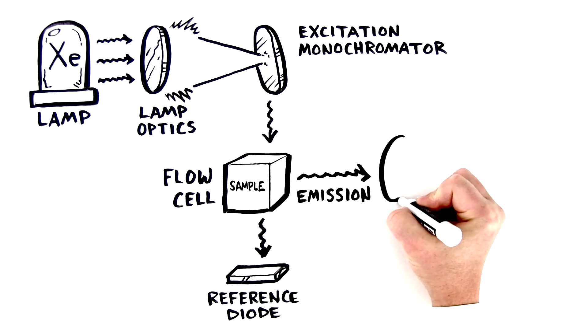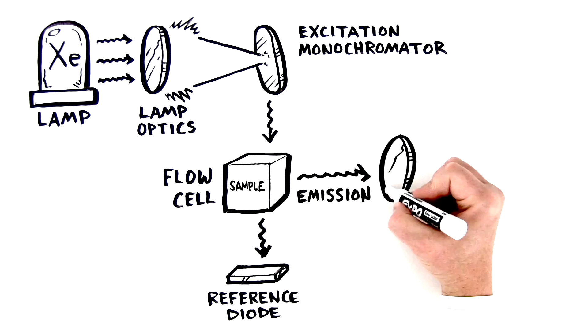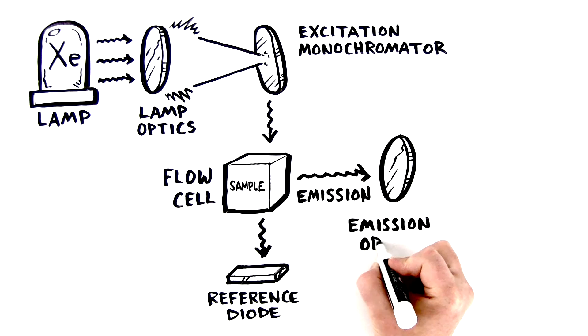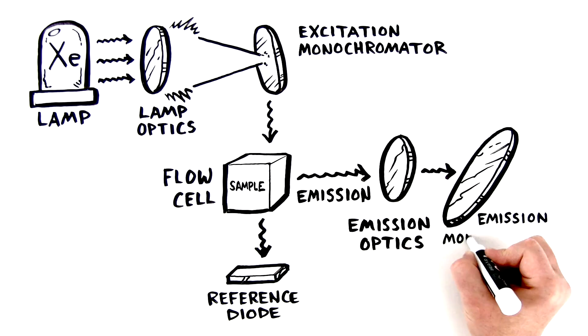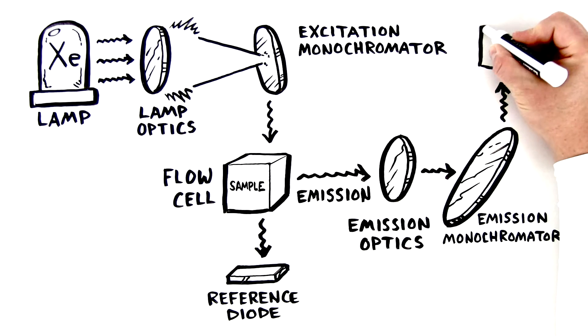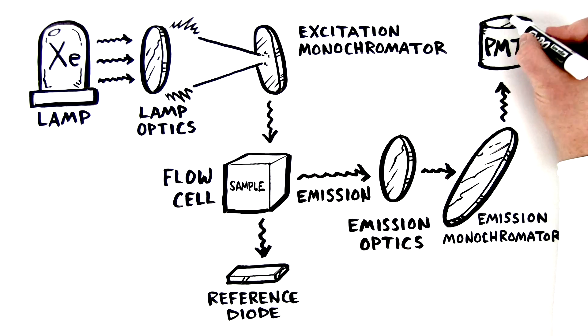Perpendicular to the excitation light beam, the emitted light is focused and filtered with emission optics. With an emission monochrometer, a specific emission wavelength can be selected. Light of this selected emission wavelength is then detected by one or two photomultiplier tubes, PMT.